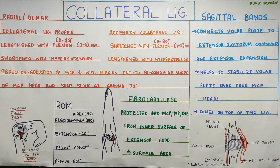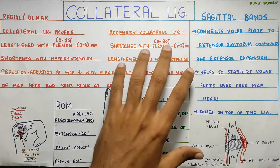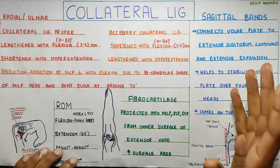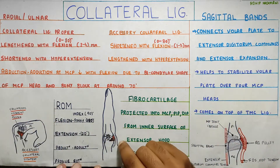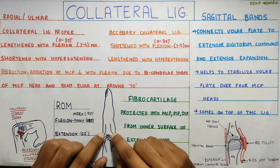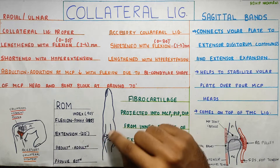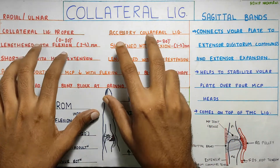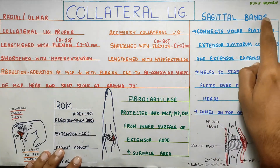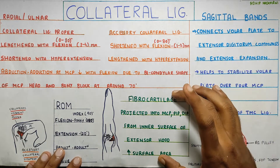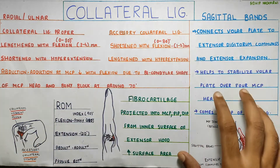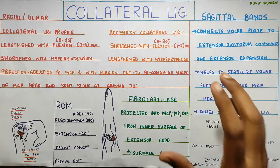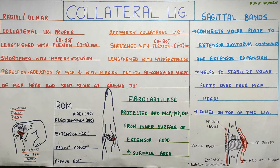In this video, we are going to talk about the collateral ligaments at the metacarpophalangeal joint. The last video was about the structure — we talked about the volar plate and the capsule around it, and how the metacarpophalangeal joint is formed. This video will be about the ligaments, then something called the sagittal band and fibrocartilage. And once we describe all the structures, we will also talk about the range of motion at the metacarpophalangeal joint.